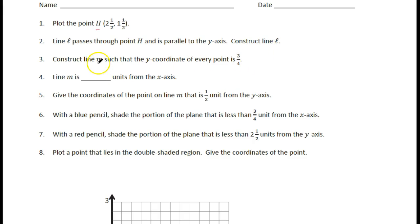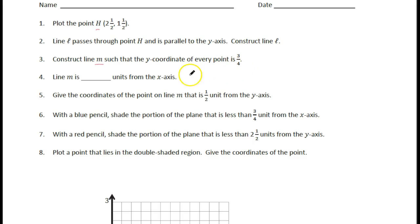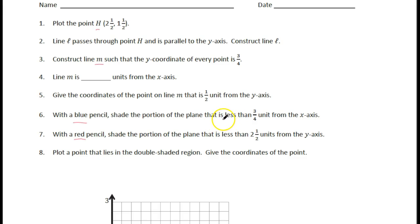Then construct a line called M where the Y coordinate for every point is three fourths. Line M is then how many units away from the X axis? Remember, if that's how high it flies, that's how high from the ground it is — three fourths. Give the coordinates of the point on line M that is one half of a unit away from the Y axis. You'll also need colored pencils — blue and red — and if you need to, go back and watch the shading part of the video. The concept is the same.